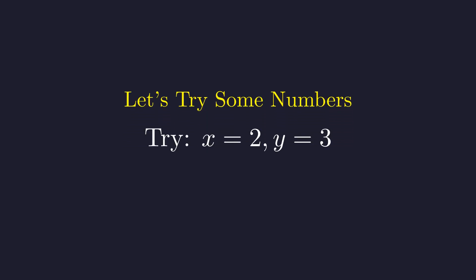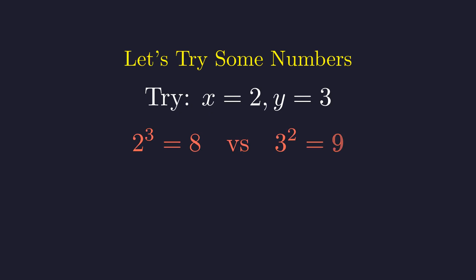Alright, let's start experimenting. The first pair most people think of is two and three. Let's check. Does two to the third equal three to the second? We get eight versus nine. Close, but not equal. This is the problem with random guessing.